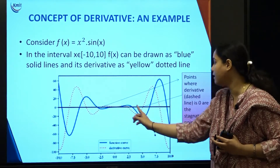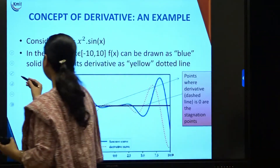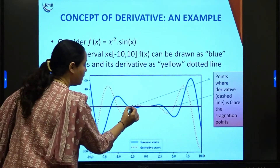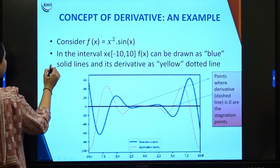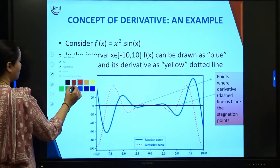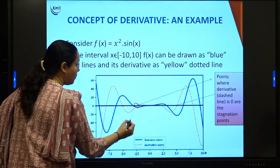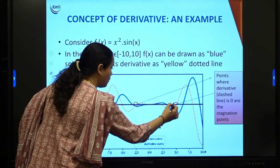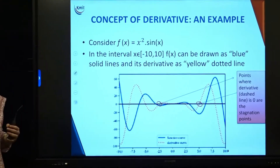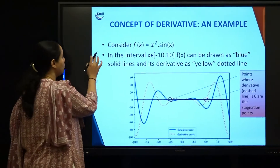You can see certain points where the orange dashed line crosses zero — these crossovers are all stagnation points of the function.